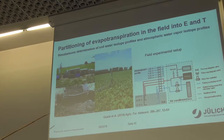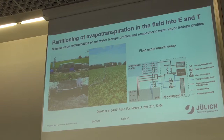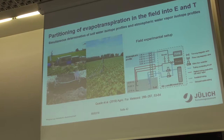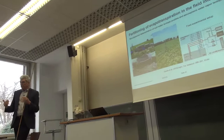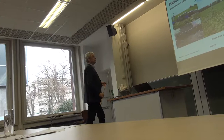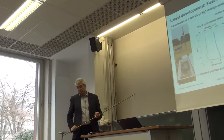Isotopes may help in partitioning evapotranspiration. The eddy covariance system measures E and T — evaporation from the soil and transpiration from the plant. We would like to know the contribution from each. We can model this, but currently lack methods to verify exactly what we're doing. Isotope-based methods can help partition these fluxes and validate how well the model performs.